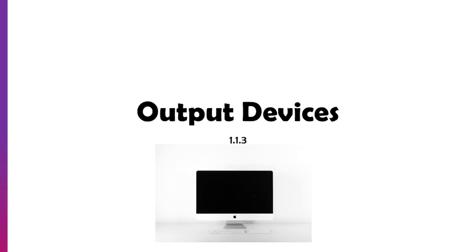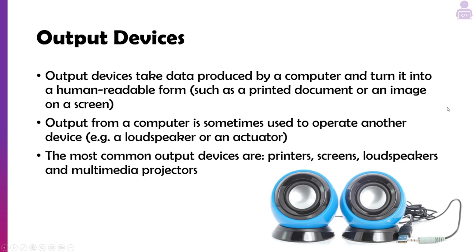Welcome back. In today's five-minute revision we're going to take a look at output devices. We've looked at input devices, so an output device takes some data produced by a computer and turns it into a human-readable form — printing something out, an image on a screen. But it could also be output to another computing device, or used to operate another device such as a loudspeaker, an actuator, or a motor.